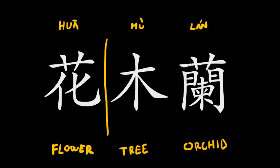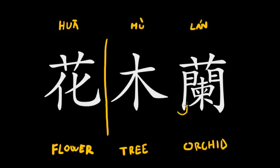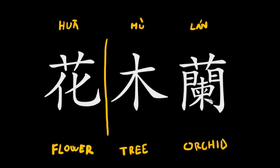You might notice that the top section of this character is the same as the top section of the first character. Similarly to the first character, this one is also separated into a top part and a bottom part — you first start and finish the top, then move to the bottom. For those who don't know much about Chinese characters, you may not know that the bottom part of this character is actually separated into two sections.